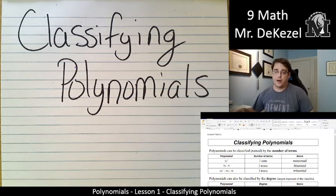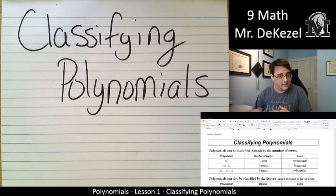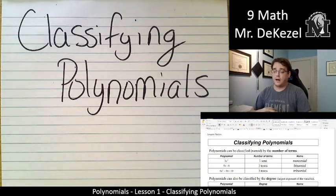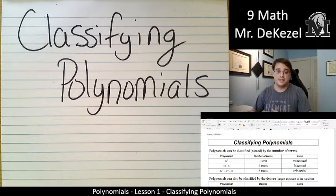Polynomials are terms, and they don't have equal signs. That's a key. If it has an equal sign, it's an equation. If it does not have an equal sign, depending on the number of terms that it has, we can classify it as a type of polynomial.